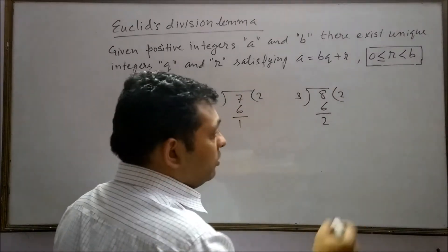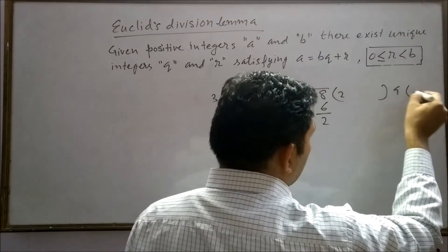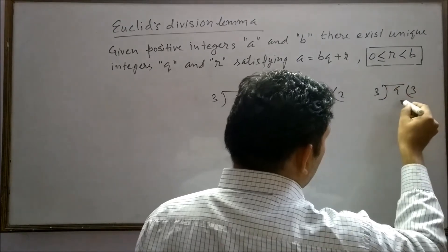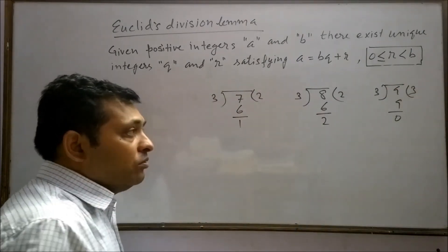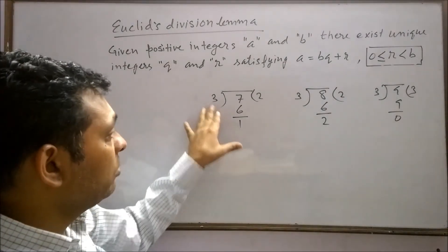If we divide 9 by 3, 3 goes into 9 three times, the remainder is 0. Similarly if we divide 10 by 3, the remainder will be 1.